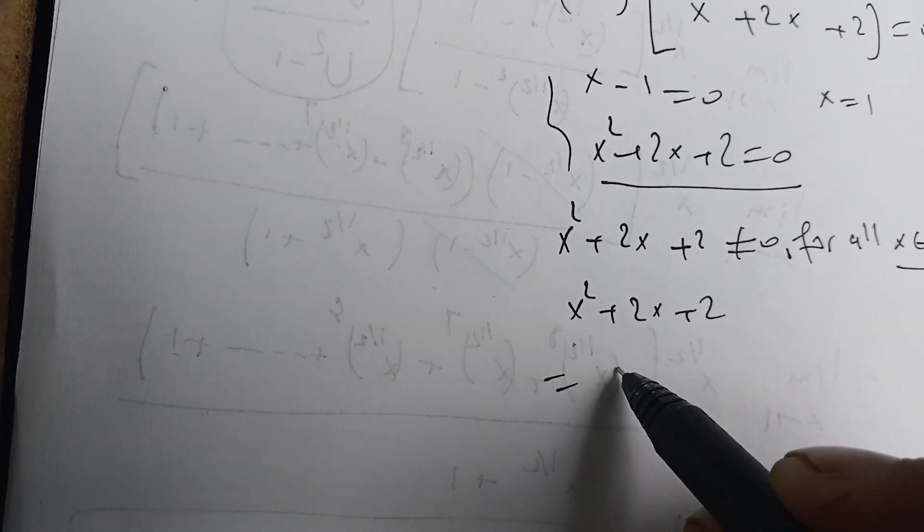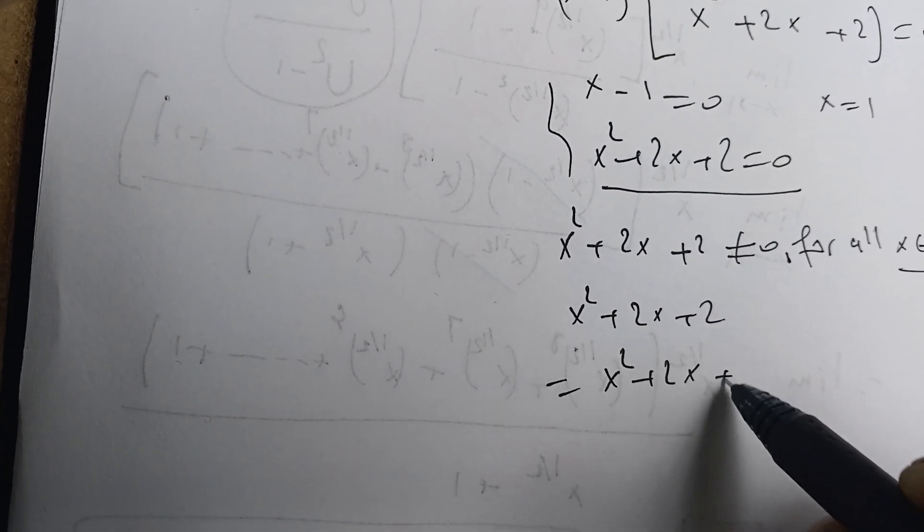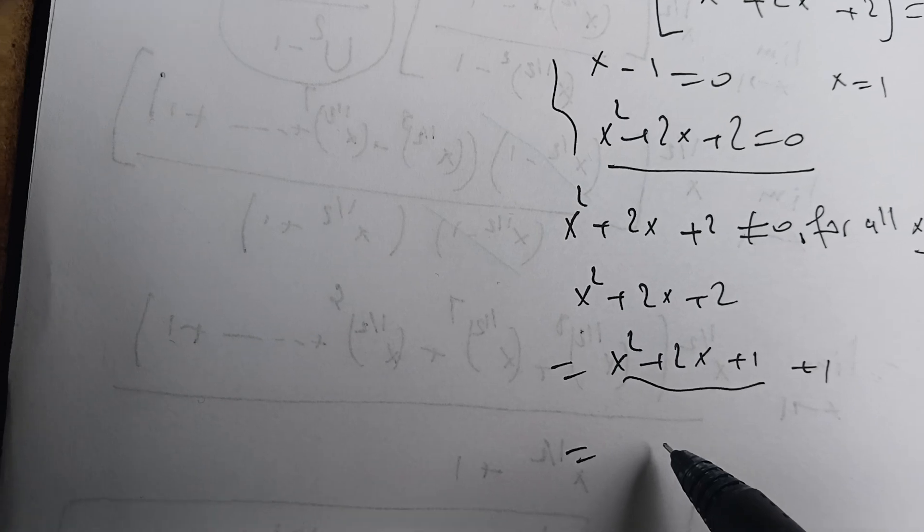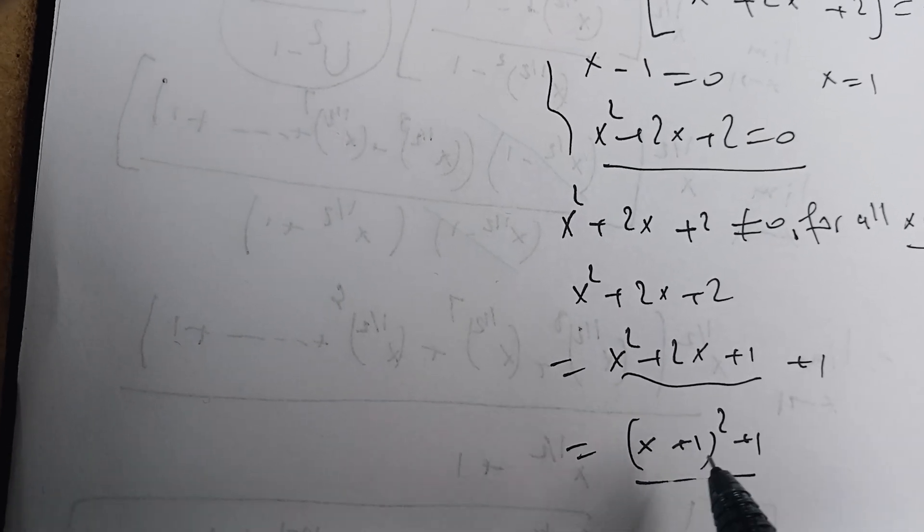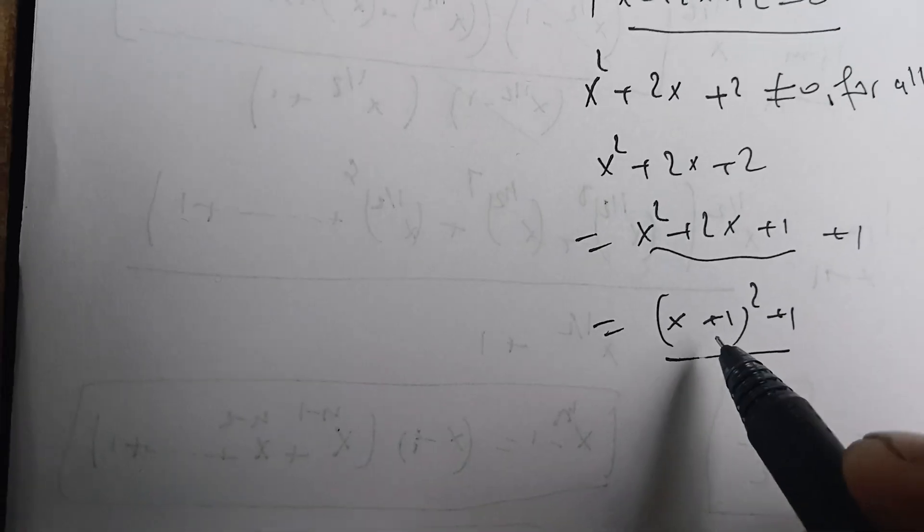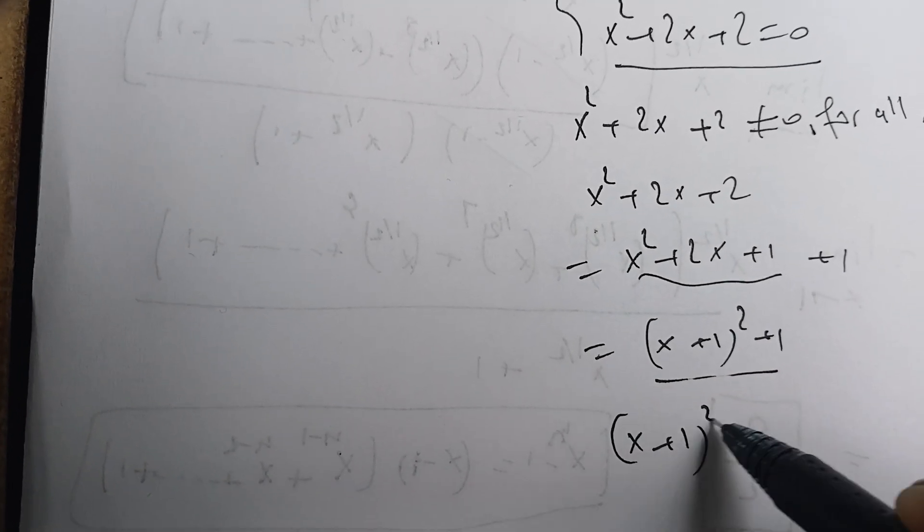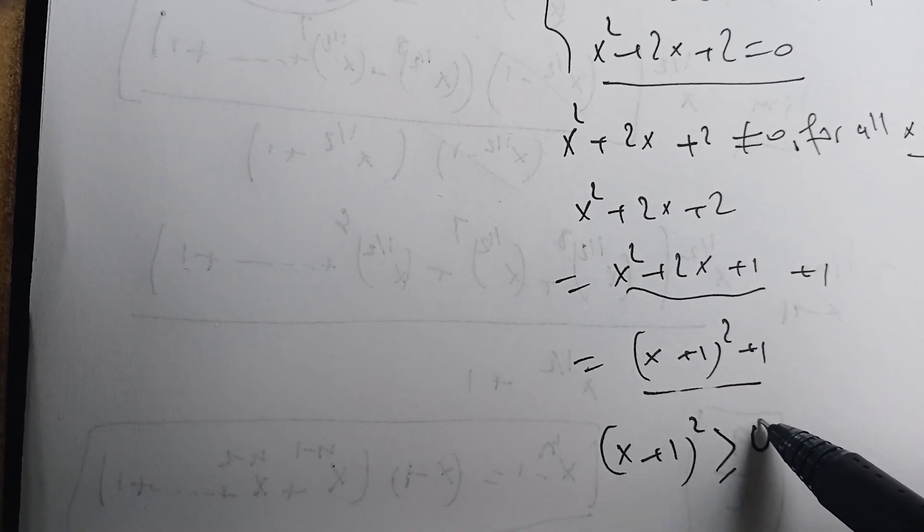Why? Because x squared plus 2x plus 2 can be written as x squared plus 2x plus 1 plus 1, and we know this one as x plus 1 squared plus 1. Therefore we know that x plus 1 squared is greater or equal than 0.